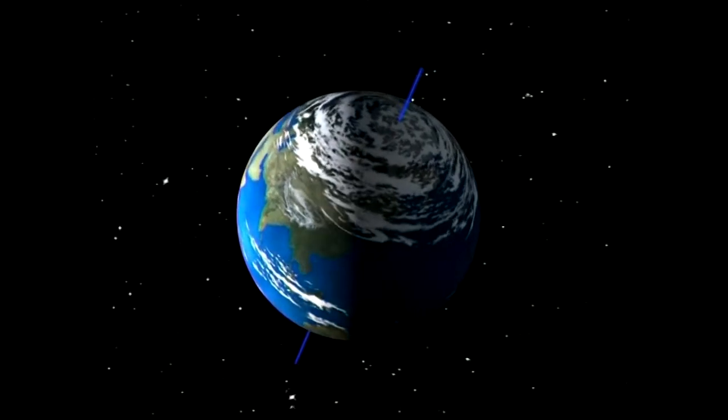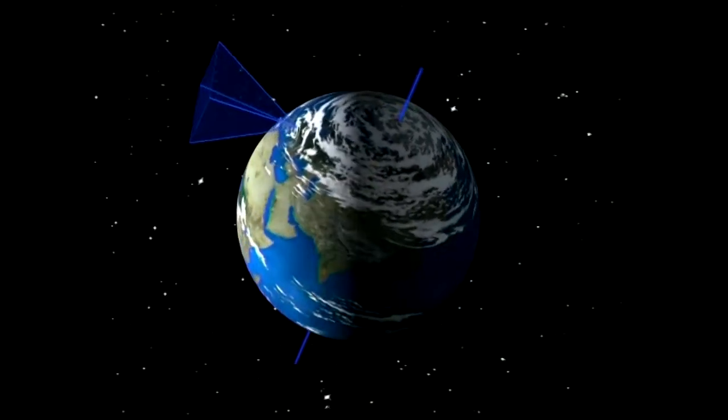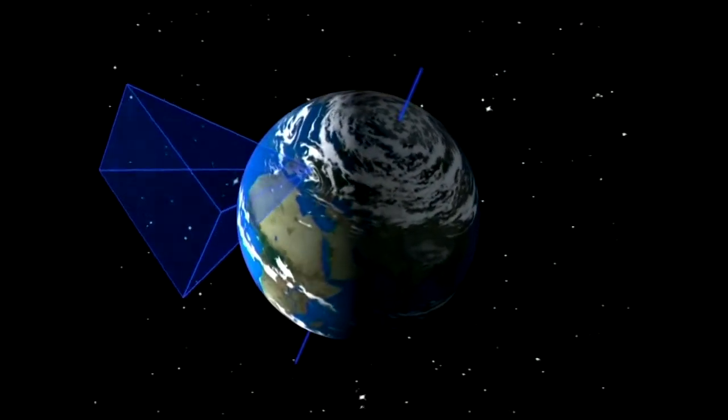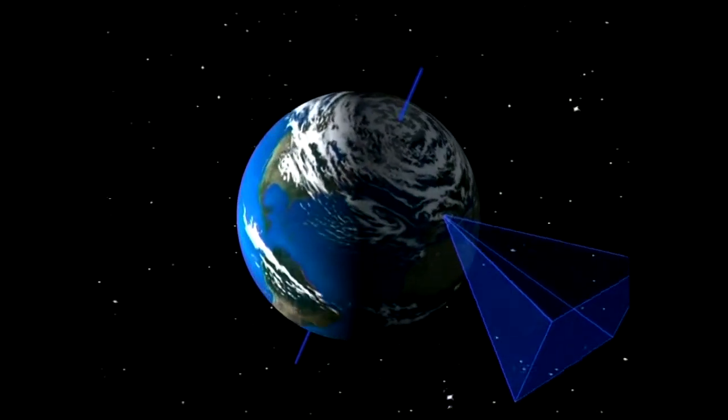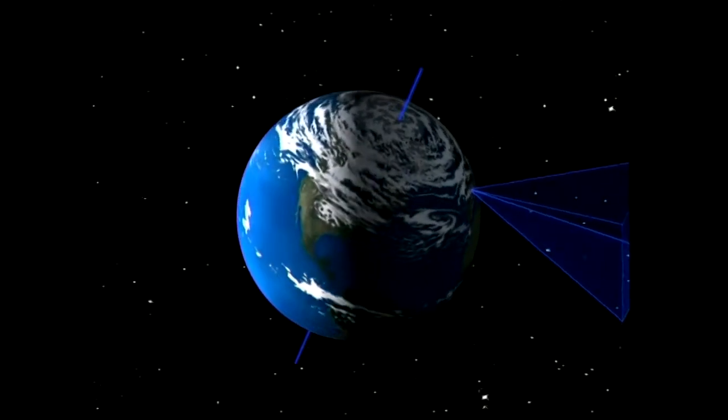Our field of vision turns with the Earth. In the day, we see the part of the sky where the sun appears. At night, we see the part of the sky which isn't exposed to the sun's rays, so we can see the stars and the planets.